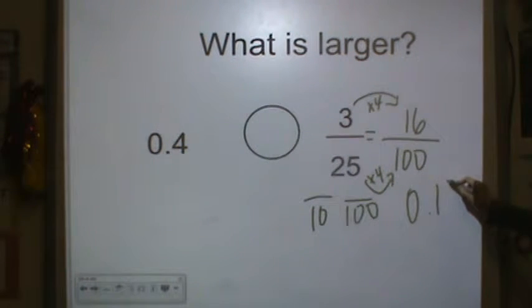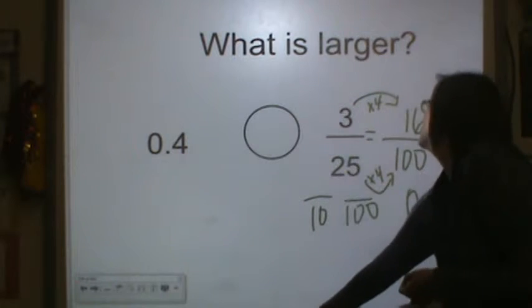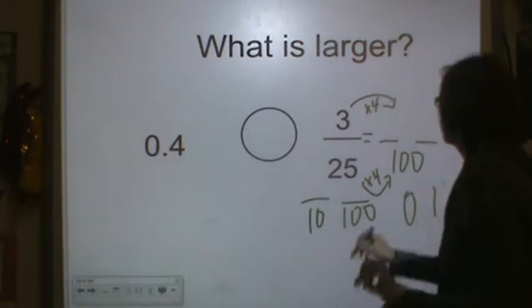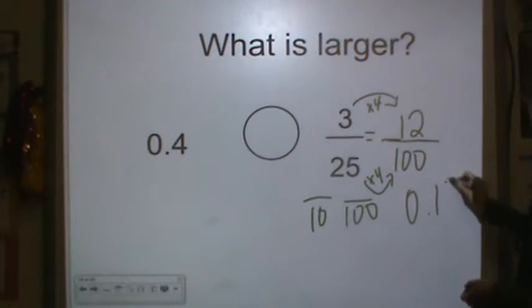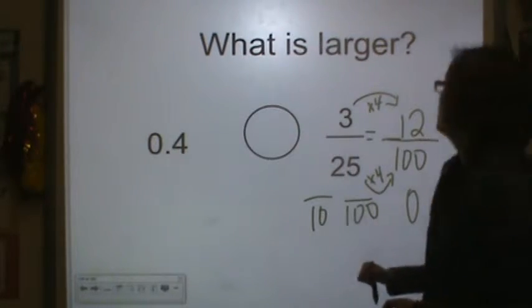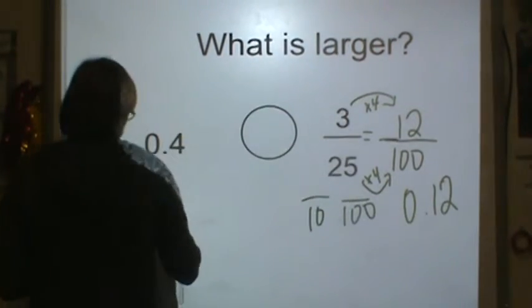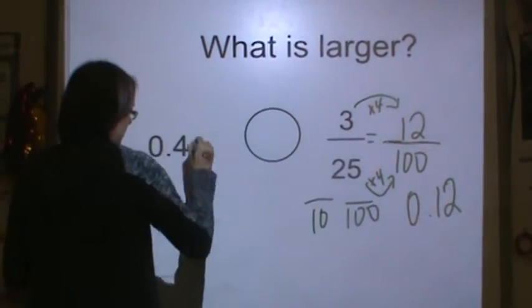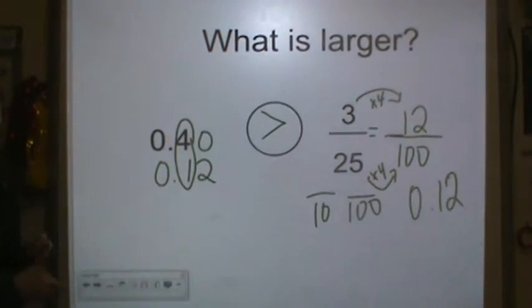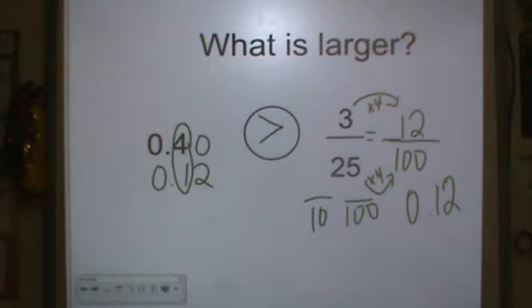3 times 4 is 16. So 16... no, 3 times 4 is 12. Sorry guys. 3 times 4 is 12. So I have 12 hundredths. Now let's look at it. Stack them. Which is bigger? The 4 is bigger than the 1. Remember we compare left to right. So 40 hundredths is bigger than 12 hundredths.